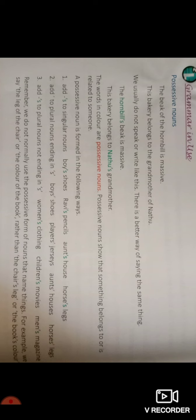Remember, we do not normally use the possessive form for nouns that name things. For example, we say 'the leg of the chair' or 'the color of the book' rather than 'the chair's leg' or 'the book's color'. Where names of things are used, we should not use apostrophe S. Most of the examples above involve living beings, for which we use apostrophe S in both singular and plural forms.